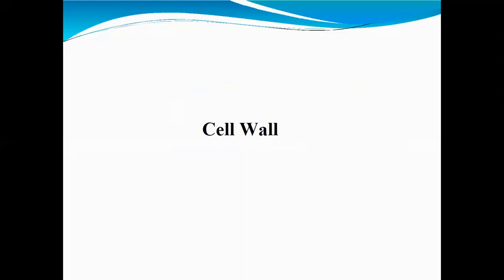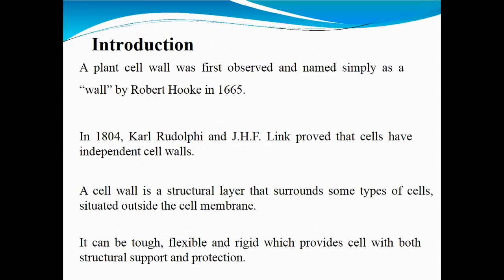Today we will discuss about cell wall. Last time in another lecture we discussed what a cell is — the structure of cell, shape of cell, composition of cell, and which organelles cells usually have. We discussed that cells have cell walls and cell membranes. Plant cells have a cell wall, however animal cells have only cell membranes. So today we will explore what a cell wall actually is.